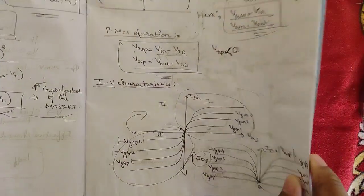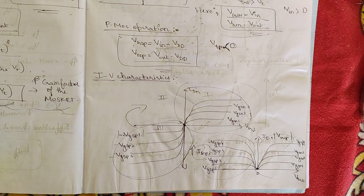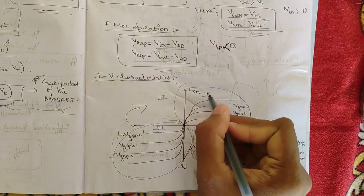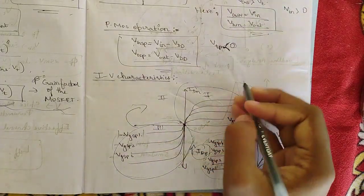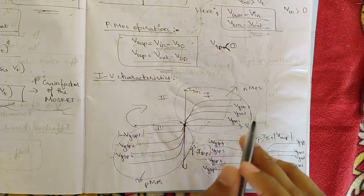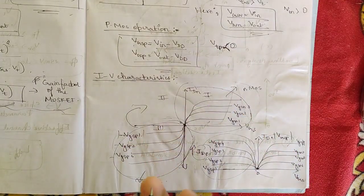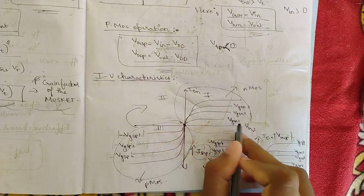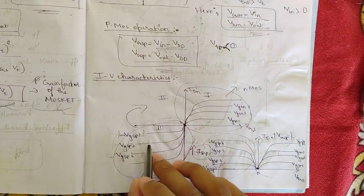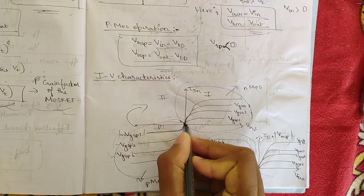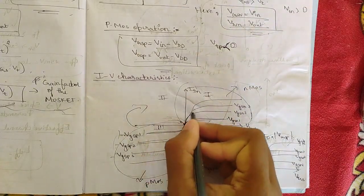Now let us look at the IV characteristic plot of an inverter. To obtain it we need the characteristic plots of both NMOS and PMOS. I have drawn a four-quadrant graph: the first quadrant represents the NMOS device and the third quadrant represents the PMOS device. For NMOS, VGSN increases and tends toward a constant. For PMOS it is the opposite, so positive values tend toward negative.